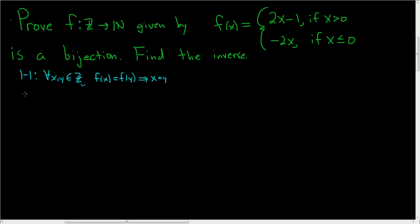We also have to show that it's onto or surjective. That means that for all little n in the codomain, which is the set of natural numbers, we can find some integer x such that f takes x and sends it to n. By the way, by the set of integers here, we mean all of the positive integers and 0 as well.